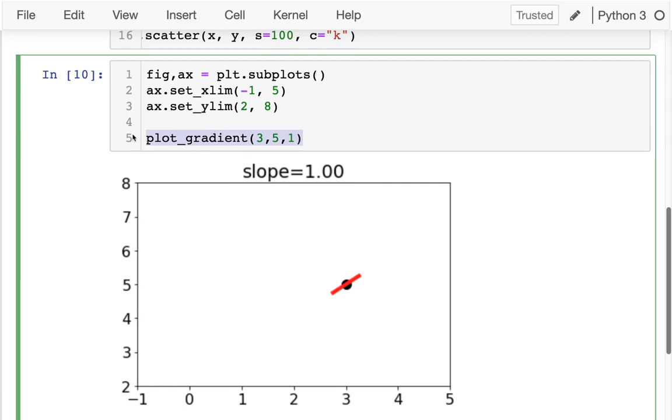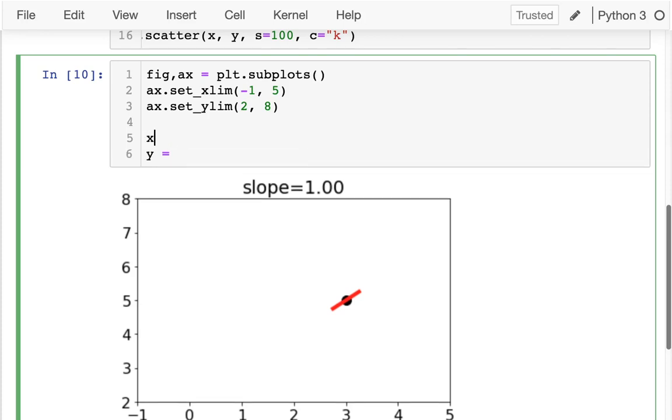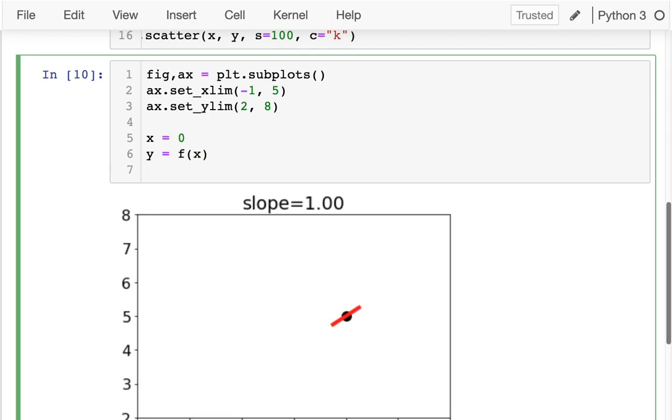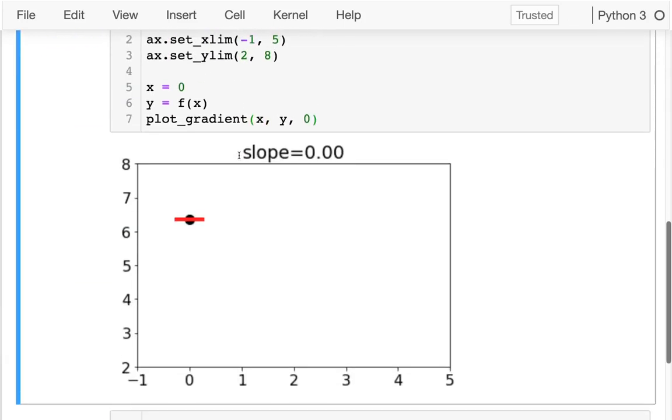Okay, so let's take a crack at this. Maybe I'll just start off saying, hey, let's try 0. I'll say y equals, I'll do something like this, x equals 0, y equals f of x. And then I'm going to just plot that point. So I'll just say plot_gradient x, y. And then I don't know what this is yet. I'll just say 0 for now, right? So I can do that.